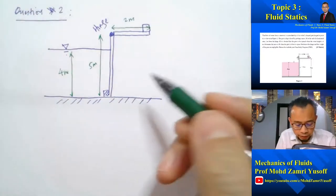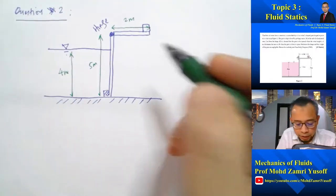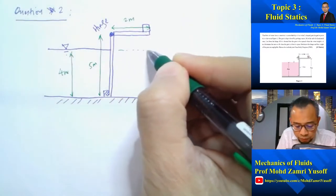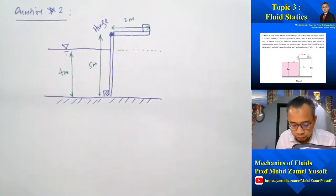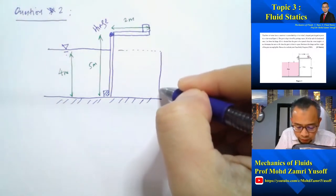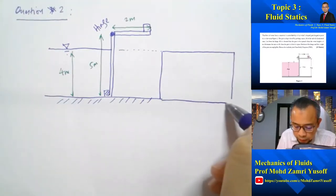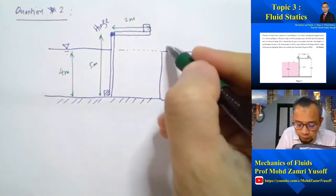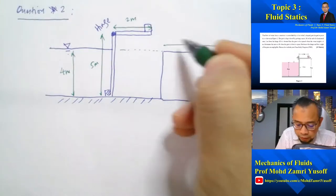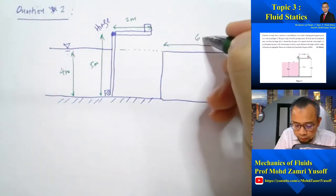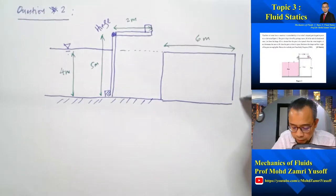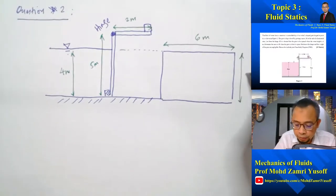So consider the part of the gate which is submerged underwater. If you view from normal view, we can see this is the part of the gate which is submerged, whereby the width is 6 meters and the height of the part of the gate which is submerged is equal to 4 meters.